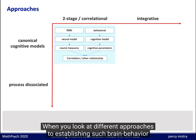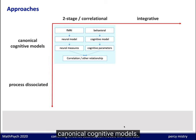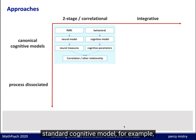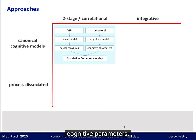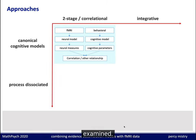When you look at different approaches to establishing brain-behavior relationships, the most elementary way is a two-stage or correlation approach using canonical cognitive models. The fMRI data is used with a neural model to extract key neural features, and a standard cognitive model, for example the drift diffusion model, might be used to describe behavioral data and infer key cognitive parameters. The relationships between these cognitive and neural mechanisms can then be examined.